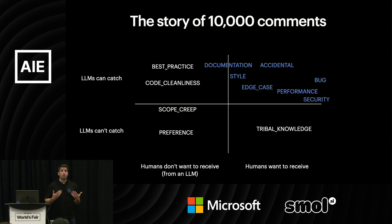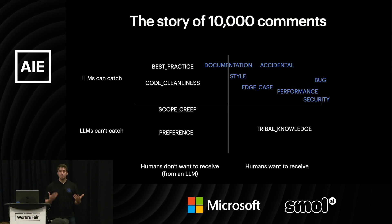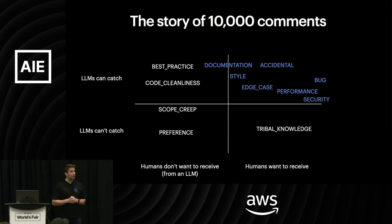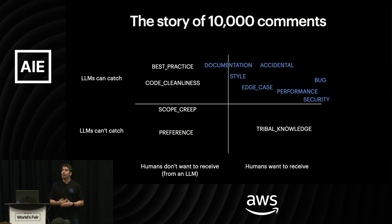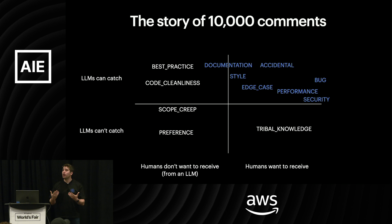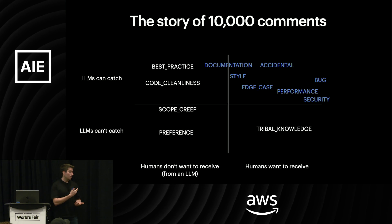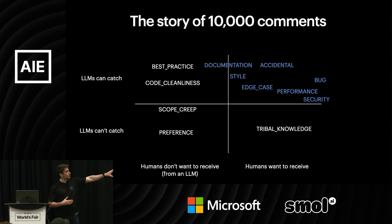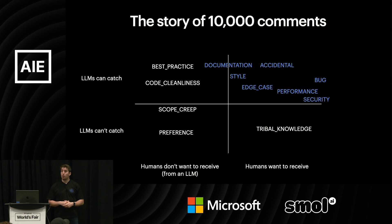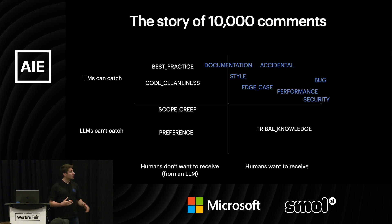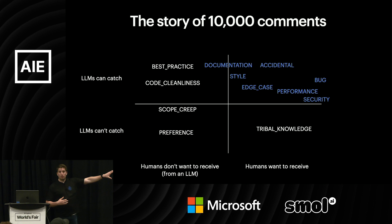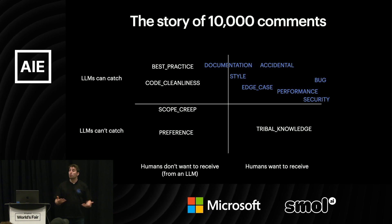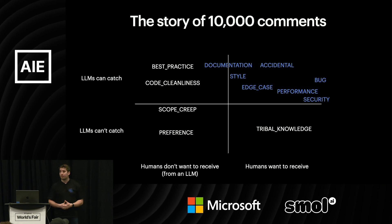We updated our prompts to only prompt the LLM to do things that were in its capacity and that humans wanted to receive, and people anecdotally started to like it a lot more. But as we started to think around how do we know this is going right — as we think about new LLMs, moving to Claude Opus instead of Sonnet — how do we know we're actually staying in this top-right quadrant? And maybe there are even more types of comments we could be leaving that we're not leaving already.